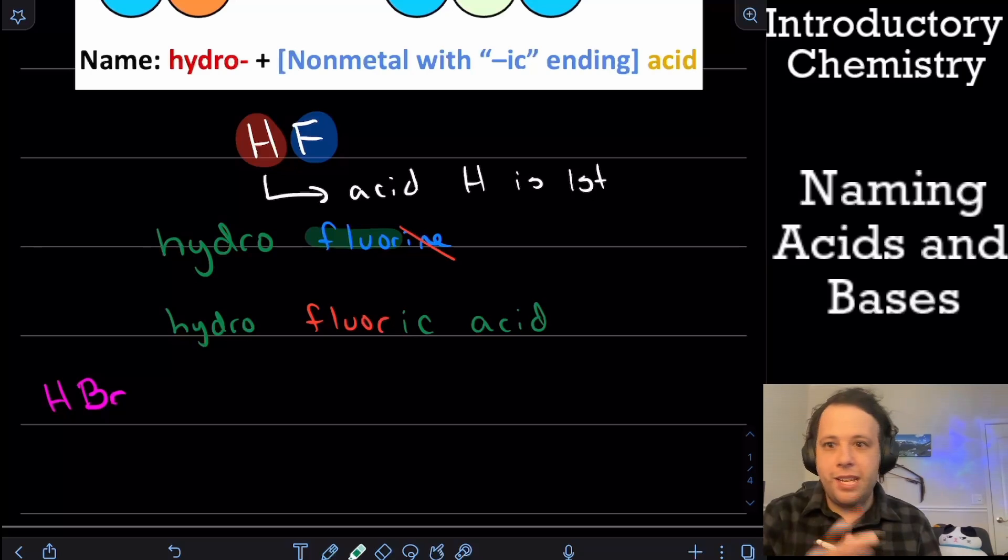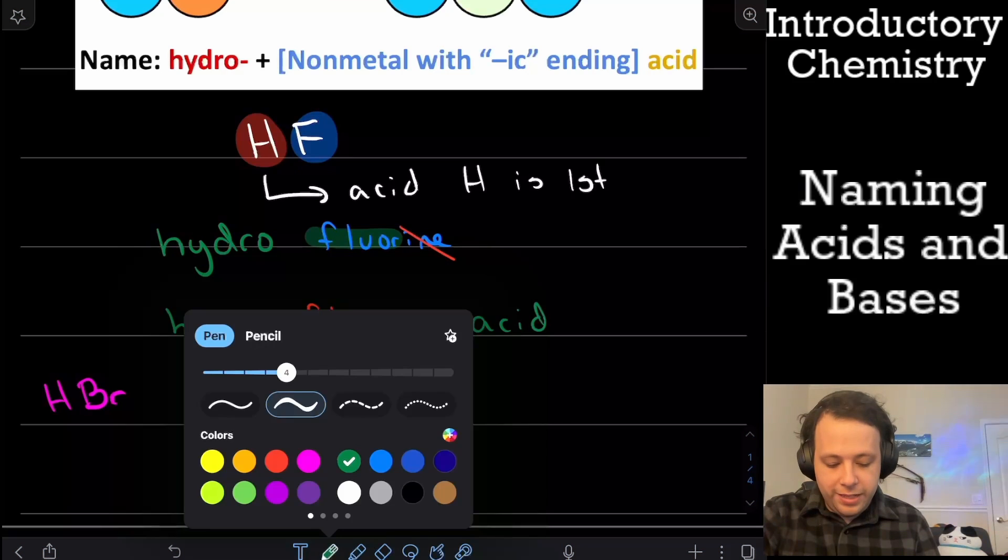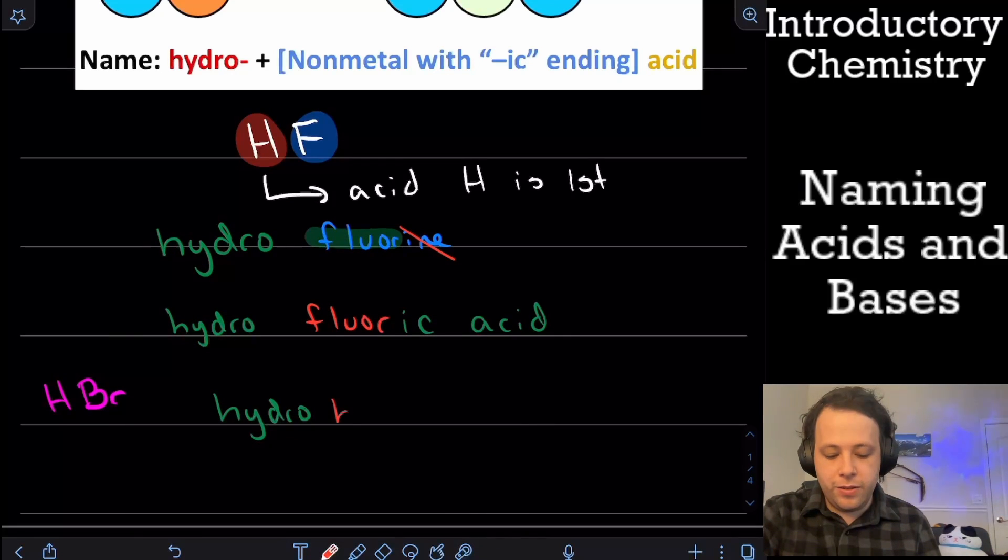If we see this one, well, once again, we have those two species here. So we have hydrogen as one, bromine as the second one. So once again, this is going to start with hydro to represent the hydrogen. Then being that we have bromine, we're going to keep the beginning. So it would be hydro, so it would be brom. And then we're going to change the ending to ic acid.